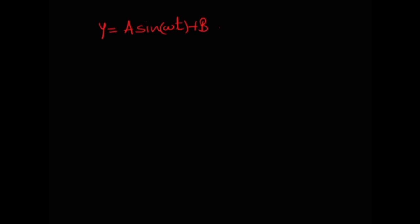The displacement is given by y = A sin(ωt) + B. This might slightly confuse you because there are two terms: A sin(ωt) and B. The second term B is not a function of time — it is just a constant. This means the oscillatory motion is happening about the point B, so the mean position is not zero but B. Taking t = 0: y = A sin(0) + B = B, confirming B is the mean position.